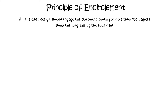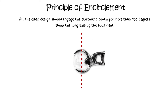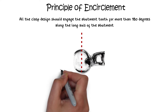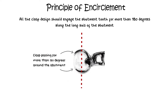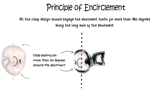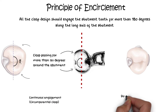If viewing the tooth from the occlusal surface and drawing a straight line across the tooth, the clasp design should engage the abutment tooth crossing this line — a straight line representing a complete 180 degrees — and the clasp must engage for more than 180 degrees. This engagement can be in the form of continuous engagement, as in the circumferential clasp design, or discontinuous engagement, as in the bar clasp design.